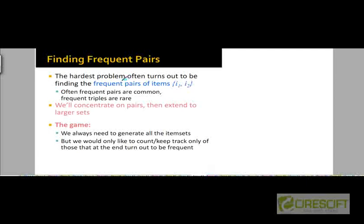It turns out that the hardest problem in the frequent item sets algorithm is finding frequent pairs of items. The hardest problem is not finding frequent singleton items, and it's also not finding triples or quadruples. The hardest problem is finding the frequent pairs.